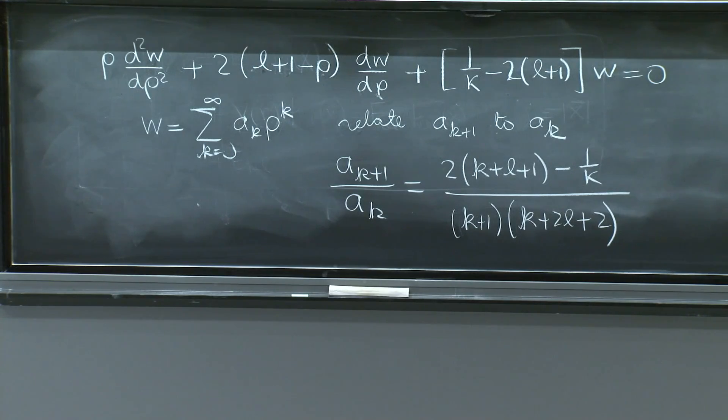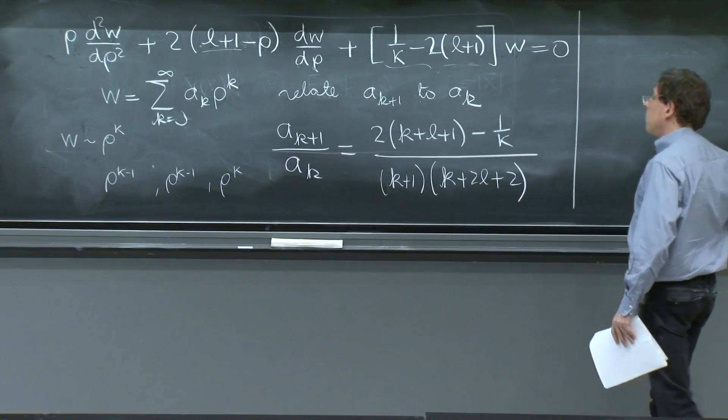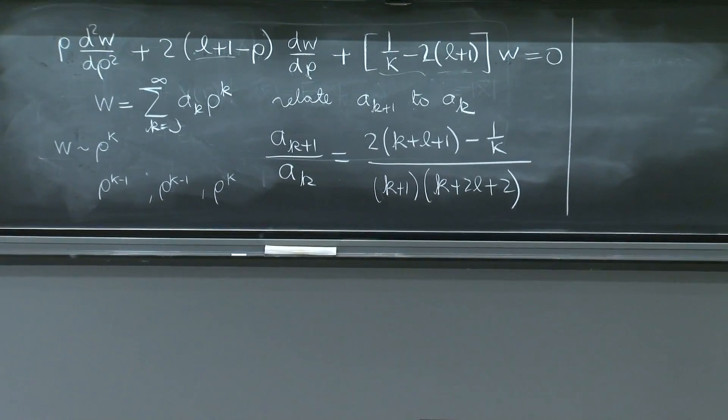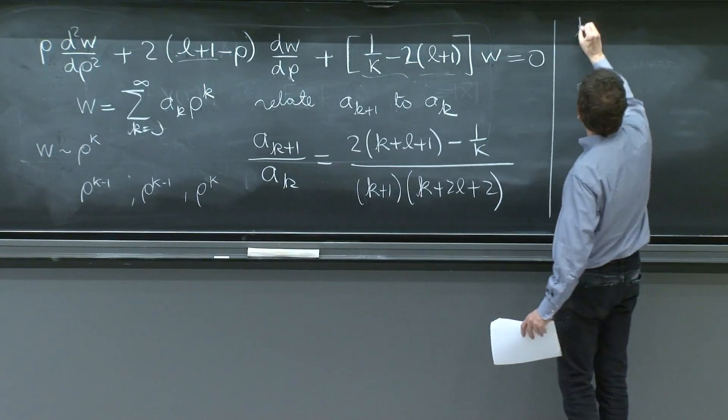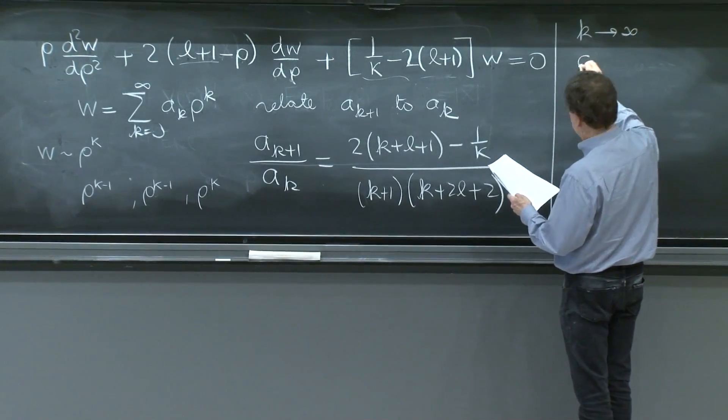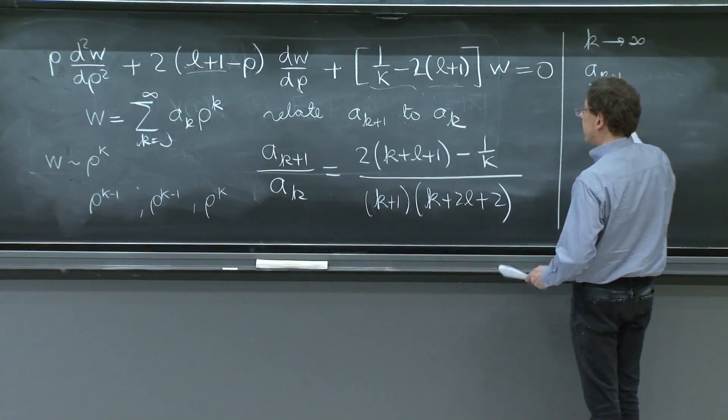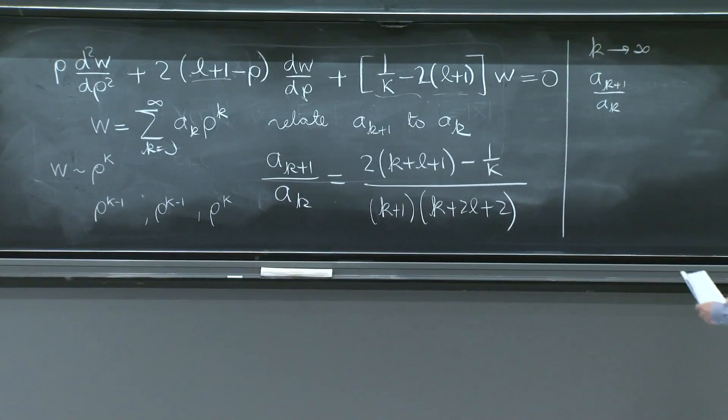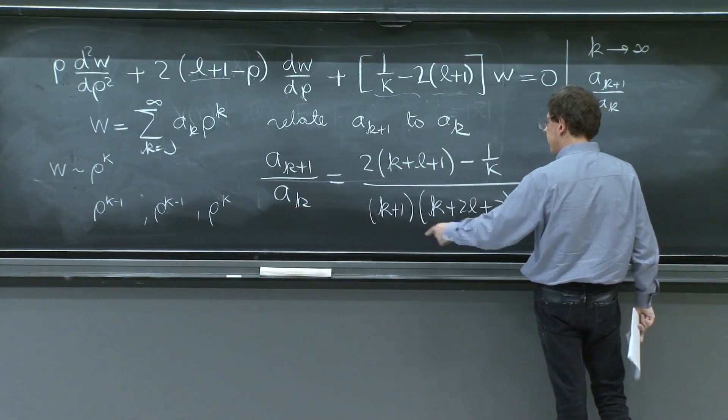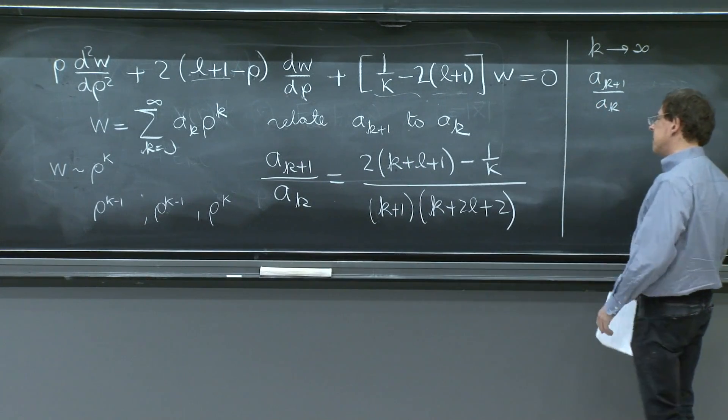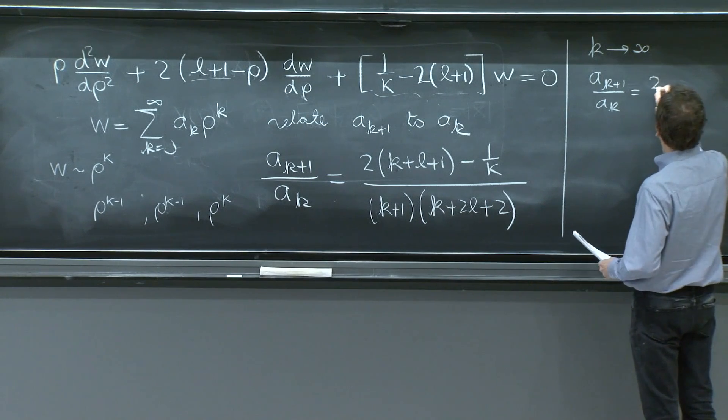We've got our recursion relation. And the issue is, again, what happens with these coefficients as k goes to infinity? So as k goes large, ak plus 1 over ak goes like what? Well, you have a k that is becoming large, and everything else doesn't matter. There's a k and a k. So there's going to be some cancellation. And this looks like, roughly, 2 to the k.